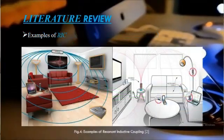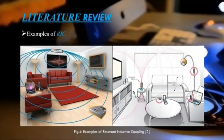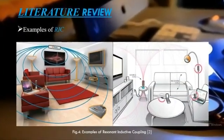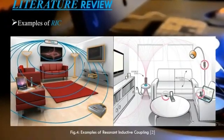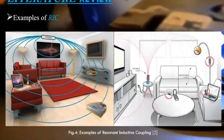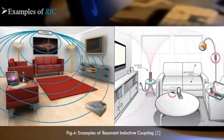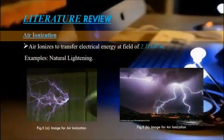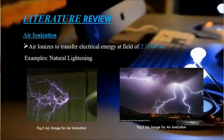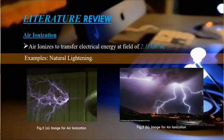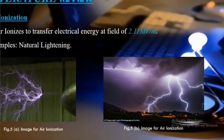A company known as Witricity works on this fundamental phenomenon to construct smart houses. As you can see in the image, there is only one source transferring energy using resonant inductive coupling, and other house appliances receive power at some distance. Another medium-range technique is called air ionization, which means ionizing the air to transfer electricity. It is very hard to achieve practically because it requires an electric field of 2.1 megavolts per meter, which is indeed very harmful. The natural lightning is a possible example of air ionization.